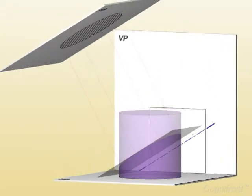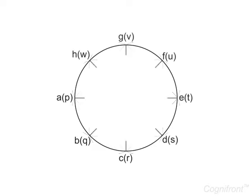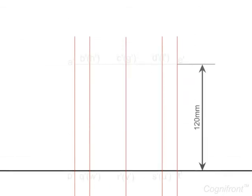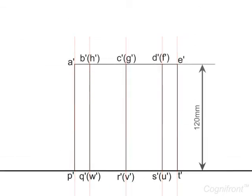So, let's construct the sectional view of the cylinder. Draw the plan which is a circle and divide it into 8 equal parts. Now, project these points above the line XY to obtain the elevation of the cylinder which is a rectangle.